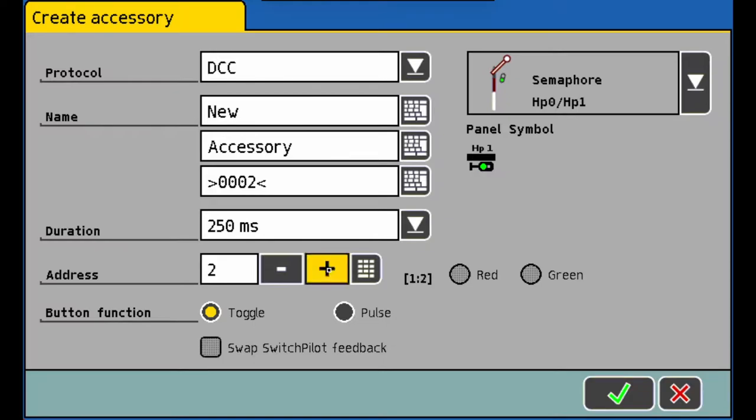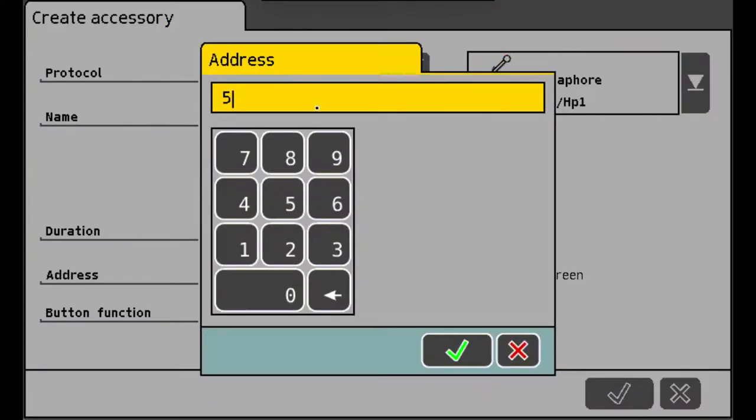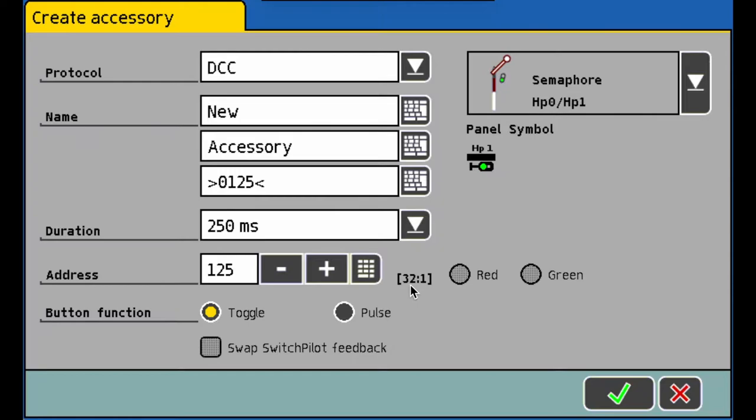So as we increase, you'll see address two, device one, port two. Next, address three, device one, port three. And then address four, same thing. This is where it changes this up. Address five, it's device two, port one. Let's change it up. Let's go to, I don't know, let's say 125. So address 125. This will give me, look at that, device 32, port one. Wow, that's a lot of devices.